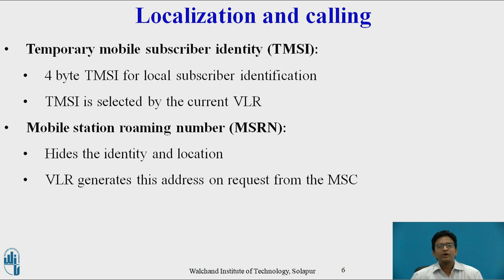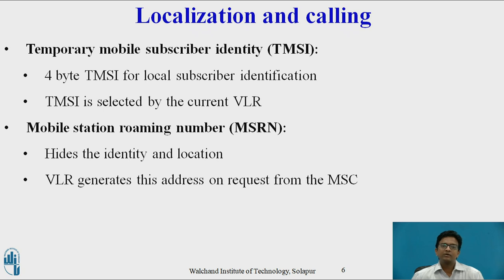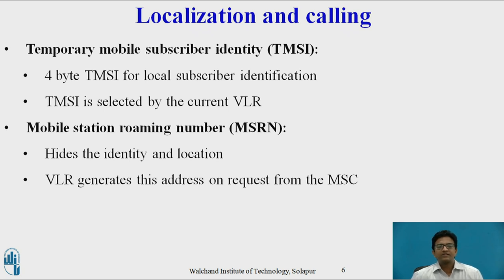Mobile Station Roaming Number (MSRN) is another temporary address that hides the identity and location of a subscriber. The VLR generates this address on request from the MSC, and the address is also stored in the HLR. Using MSRN, incoming calls are channeled to the mobile station. The MSRN has the same structure as MSISDN: country code of the visited network, national destination code (NDC) of the visited network, and subscriber number in the current mobile network.